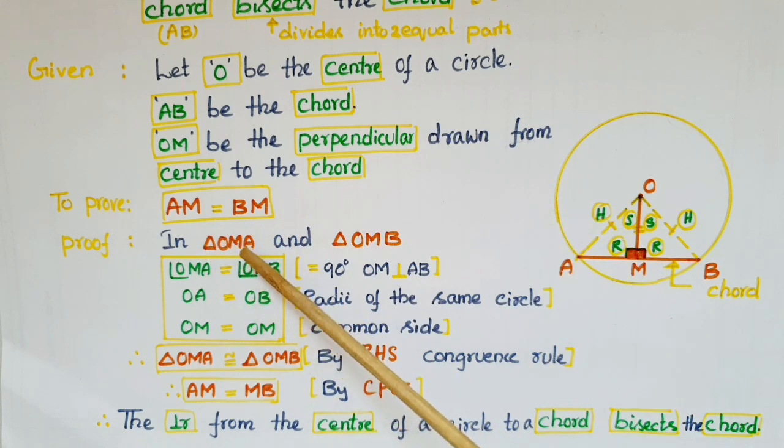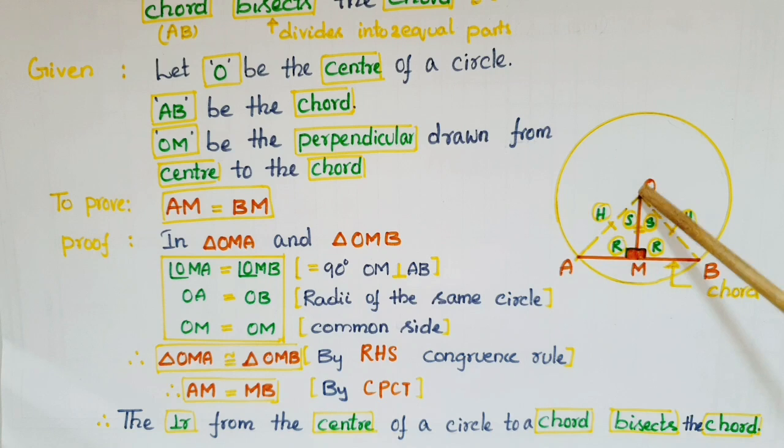So take these two triangles, triangle OMA and triangle OMB. These two angles are equal. Angle OMA is equal to angle OMB is equal to 90 degrees, because OM is perpendicular to AB. That is given in the problem.